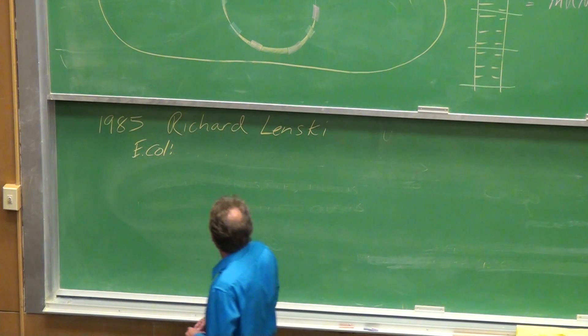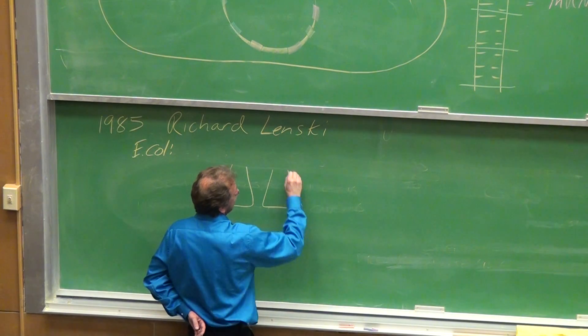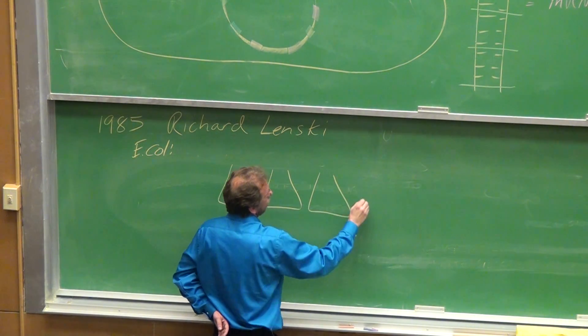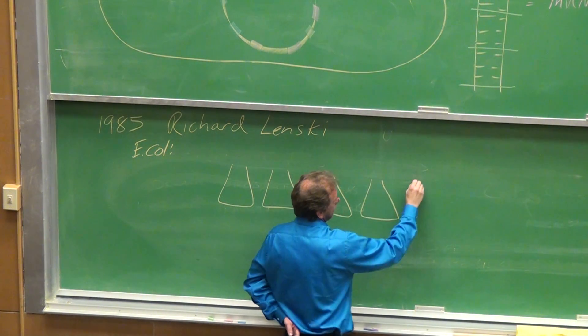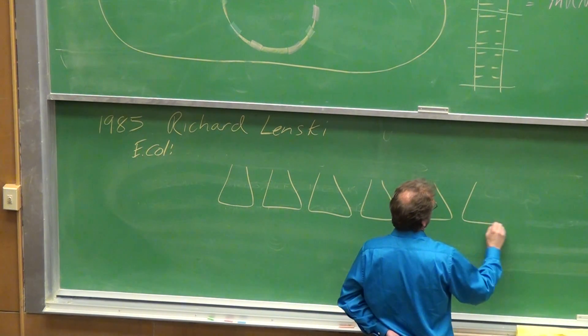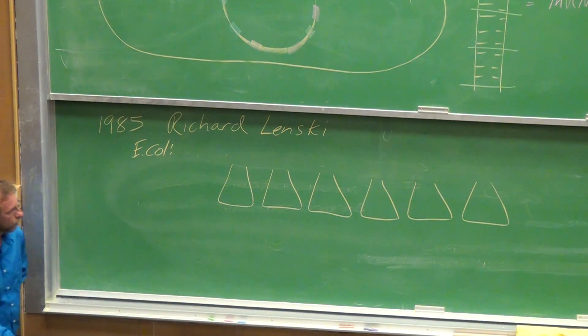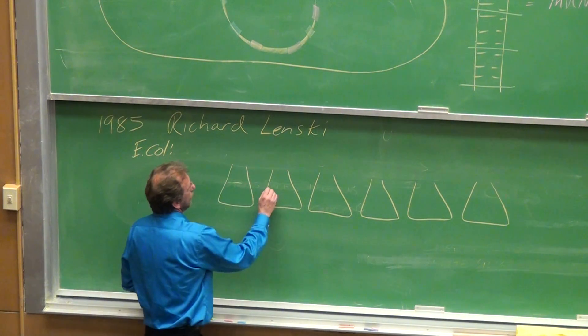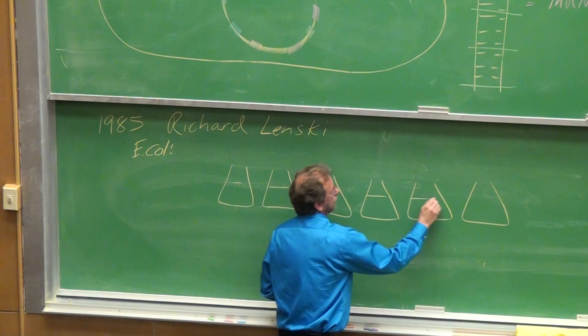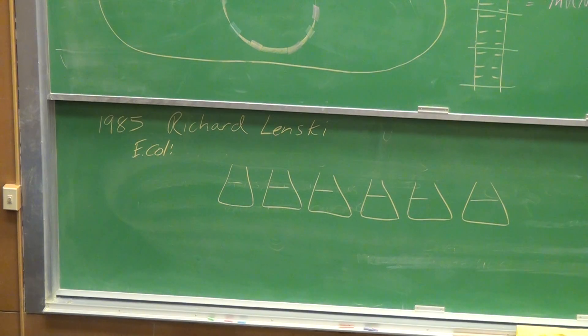So what Lenski did is he took a strain of E. coli and he put it into 12 flasks of a nutrient agar medium. I'm not going to draw all 12, I'm just going to put 6 up here.